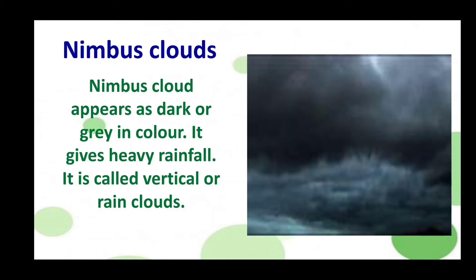Next one is nimbus clouds. Nimbus clouds are very dark or grey in colour and give very heavy rainfall. Nimbus clouds are also called vertical clouds or rain clouds. So, cirrus clouds, stratus clouds, cumulus clouds, and nimbus clouds are the different types of clouds.